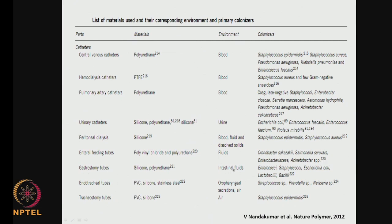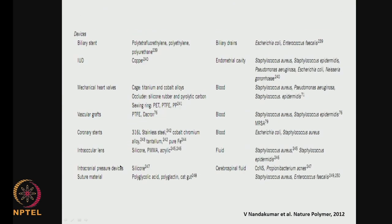Gastrostomy tubes made of silicone or polyurethane, in intestinal fluids, can have Enterococcus, Staphylococcus, and E. coli. Endotracheal tubes made of PVC, silicone, or stainless steel can have Staphylococcus. Tracheotomy tubes made of PVC and silicone in an air environment can have Staphylococcus epidermis. Titanium and stainless steel used in spinal implants, in contact with fluids, can have coagulase-negative Staphylococcus or Mycobacterium tuberculosis. Penile implants made of silicone, in contact with urine and fluids, can have gram-positive rods and cocci. Breast implants made of silicone or polyurethane can have coagulase-negative Staphylococcus.